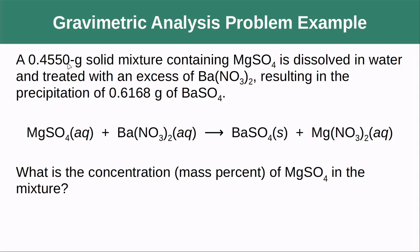A 0.4550 gram solid mixture containing magnesium sulfate is dissolved in water. So I started off with a solid, dissolved it in water to make a solution of magnesium sulfate containing 0.4550 grams. How much water did I add? It doesn't matter — it's not going to enter into the math. What is important is that we treated that solution with an excess of barium nitrate, and this resulted in the precipitation of 0.6168 grams of barium sulfate.